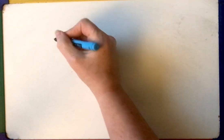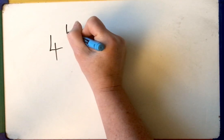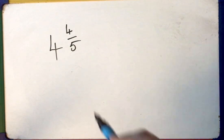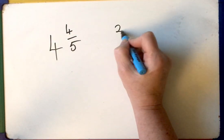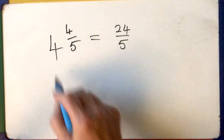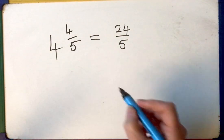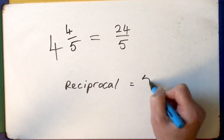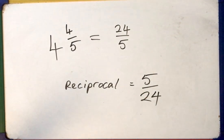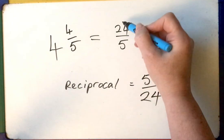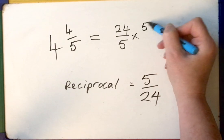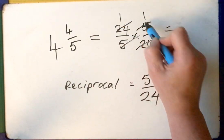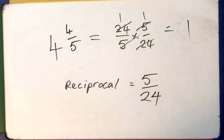Here's one for you to have a go at. What's the reciprocal of four and four fifths? Four fives are 20, plus four is 24 over five — so that's what four and four fifths is as an improper fraction. The reciprocal is five over 24. If I multiply the number by its reciprocal, the answer has to be one: 24 divided by 24 is one, five divided by five is one, one times one is one.